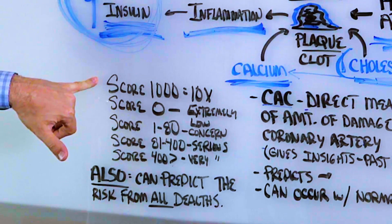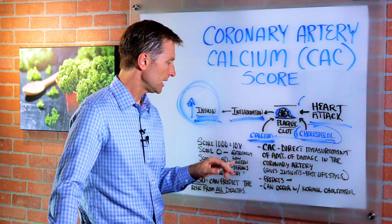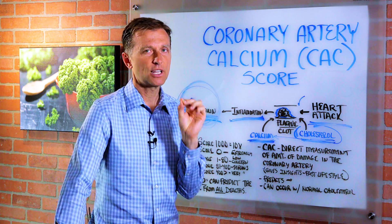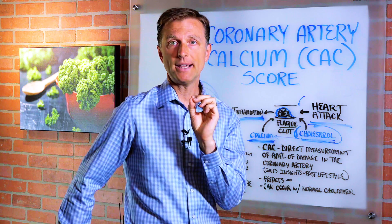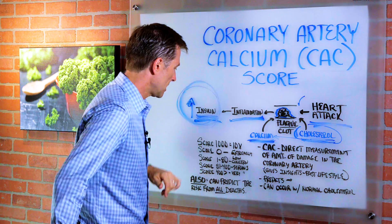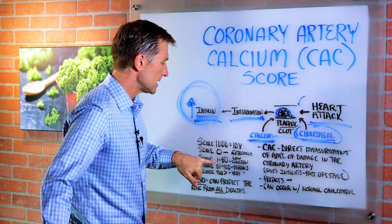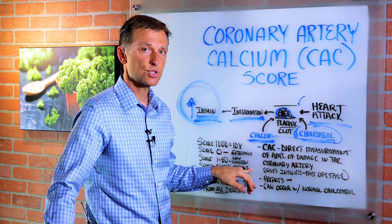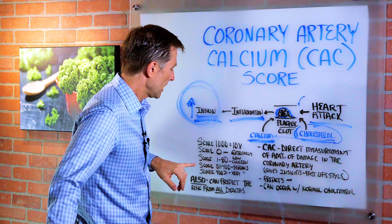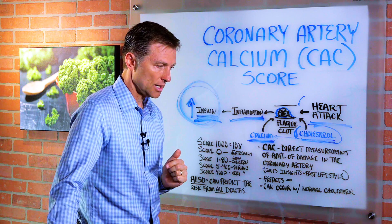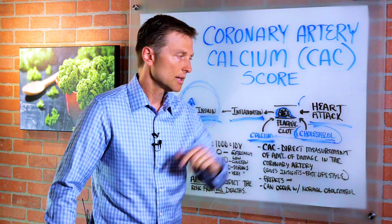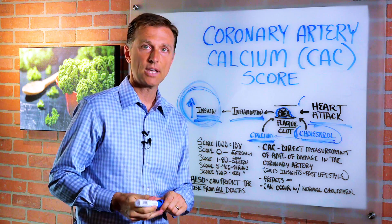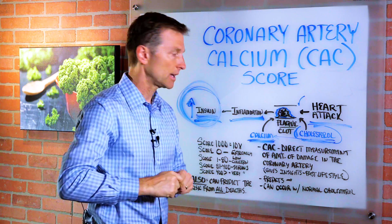Now, if you have a score of 1,000, that means your risk of getting a heart attack is 10x. If your score is zero, your risk is extremely low — chances are you are not going to die of a heart attack. If your score is 1 to 80, you should be concerned. If your score is 81 to 400, it's a pretty serious situation and you better start changing your lifestyle. If your score is greater than 400, you better make sure your will is completely written out and start studying how to lower this really fast. But you can reverse it — you can slow it down, stop it, reverse it, and improve it greatly.